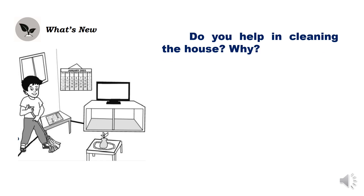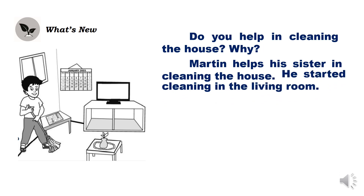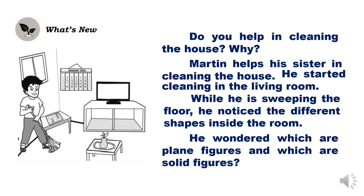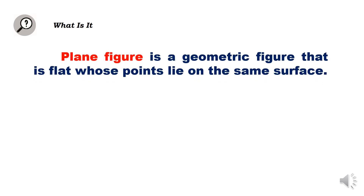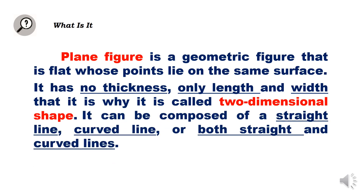Do you help in cleaning the house? Notice the different shapes inside a room — Martin wondered which are the plane figures and which are the solid figures. A plane figure is a geometric figure that is flat whose points lie on the same surface. It has no thickness, only length and width. That is why it is called a two-dimensional shape. It can be composed of a straight line, a curved line, or both straight and curved lines.